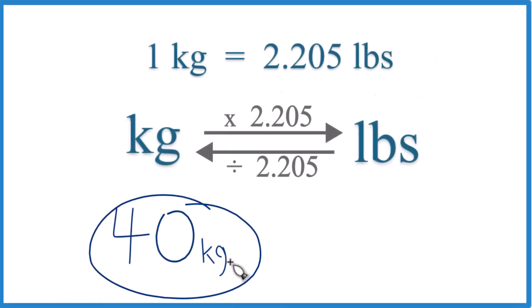Right, so let's convert 40 kilograms to pounds. The thing you need to know is that one kilogram is 2.205 pounds. This is what we call a conversion factor, and we need it when we go from kilograms to pounds or pounds to kilograms.